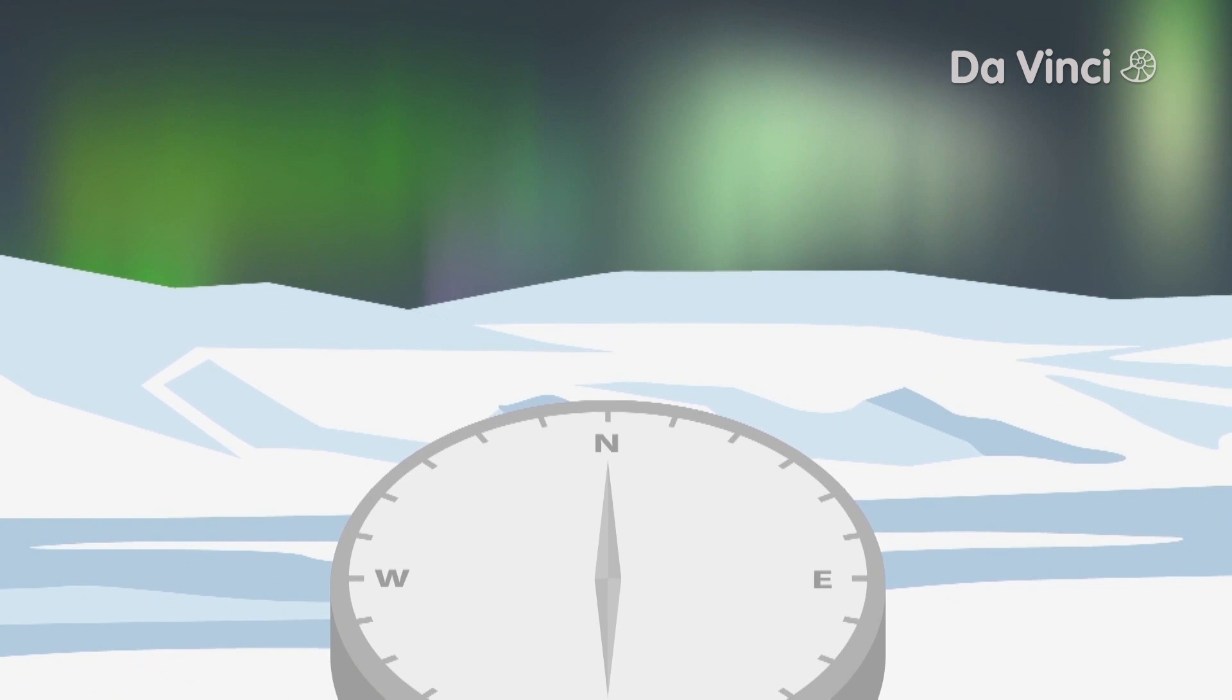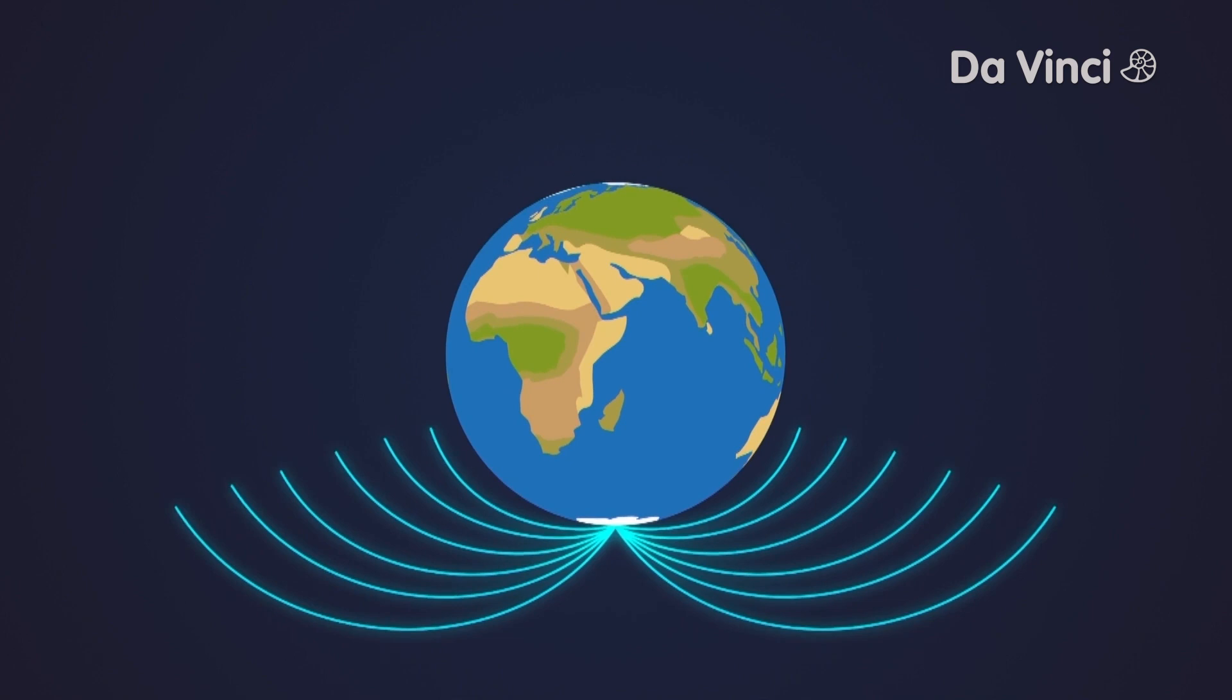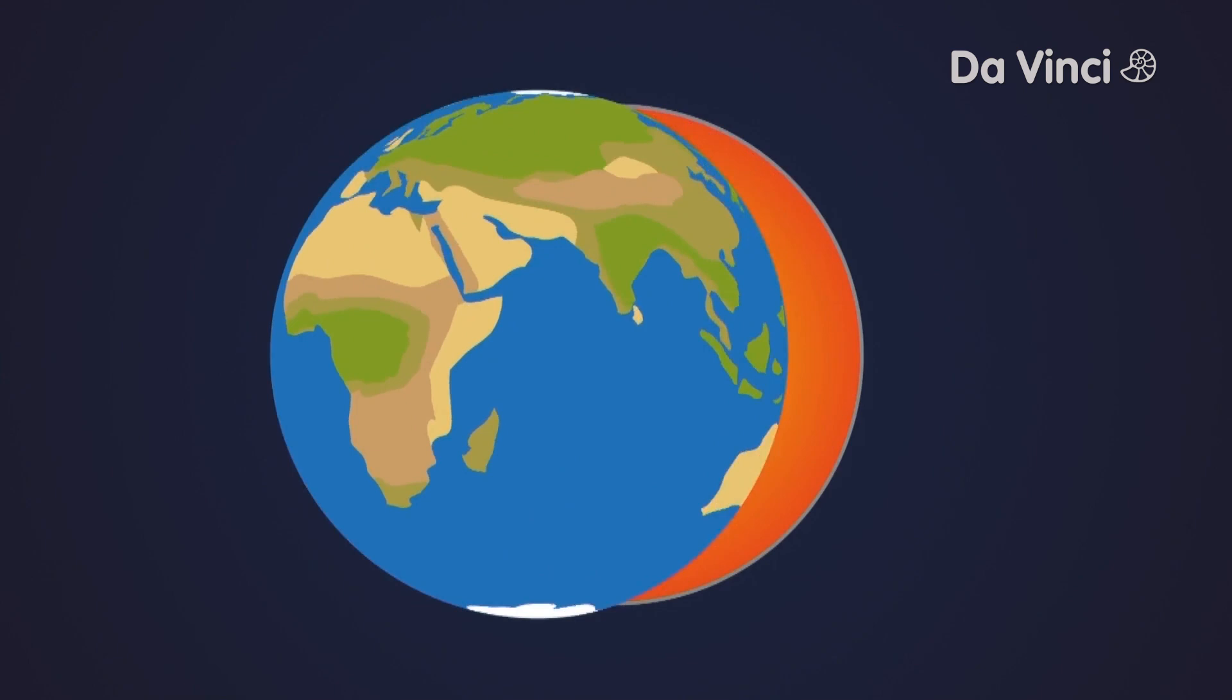A compass needle that points to the north and the mysterious polar lights, both have the same cause, the Earth's magnetic field. Our Earth is a gigantic magnet.